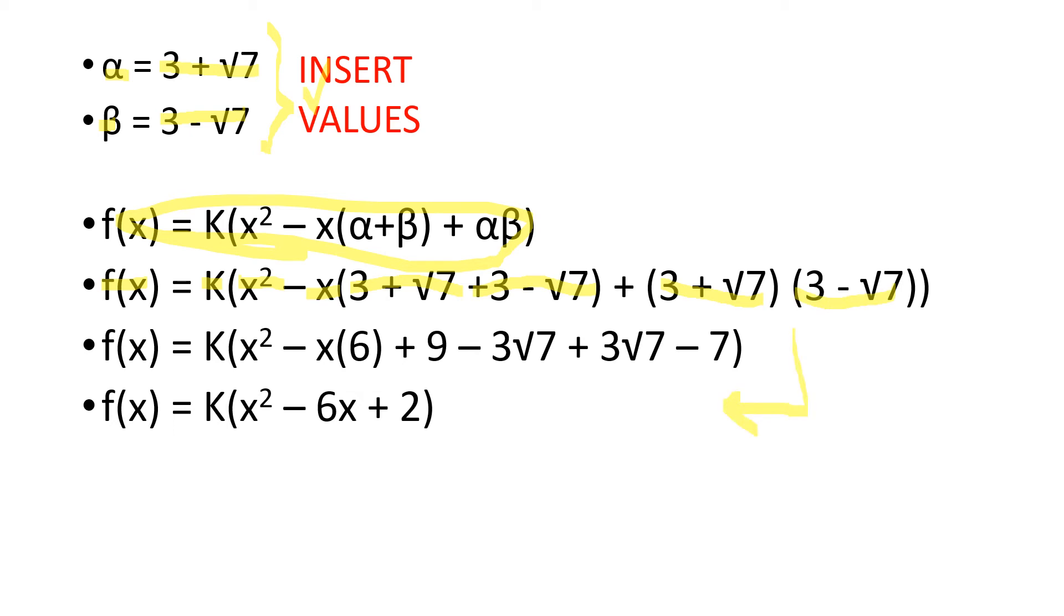You are going to have to simplify it, and you should eventually get to f of x equals k multiplied by x square minus 6x plus 2.